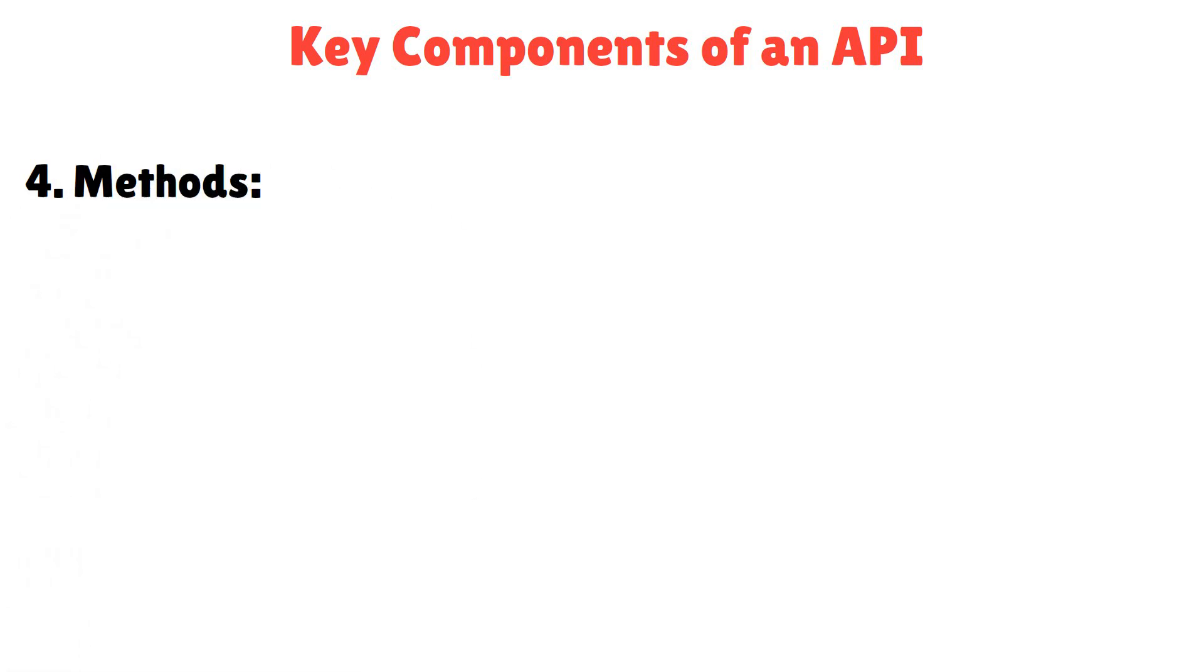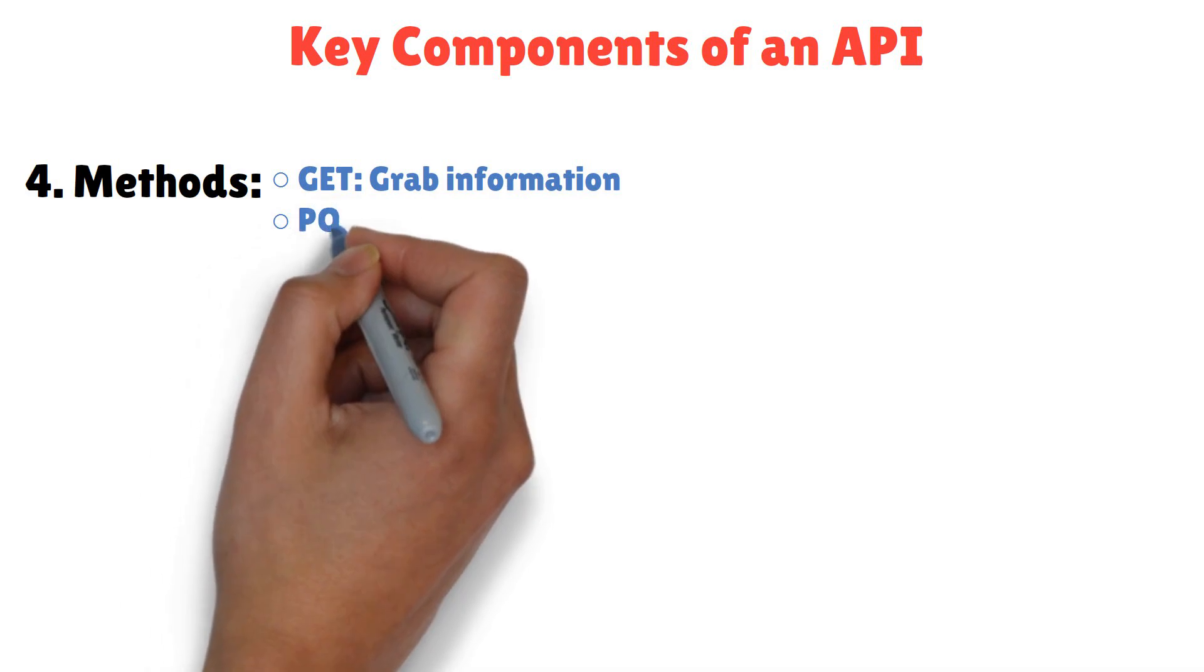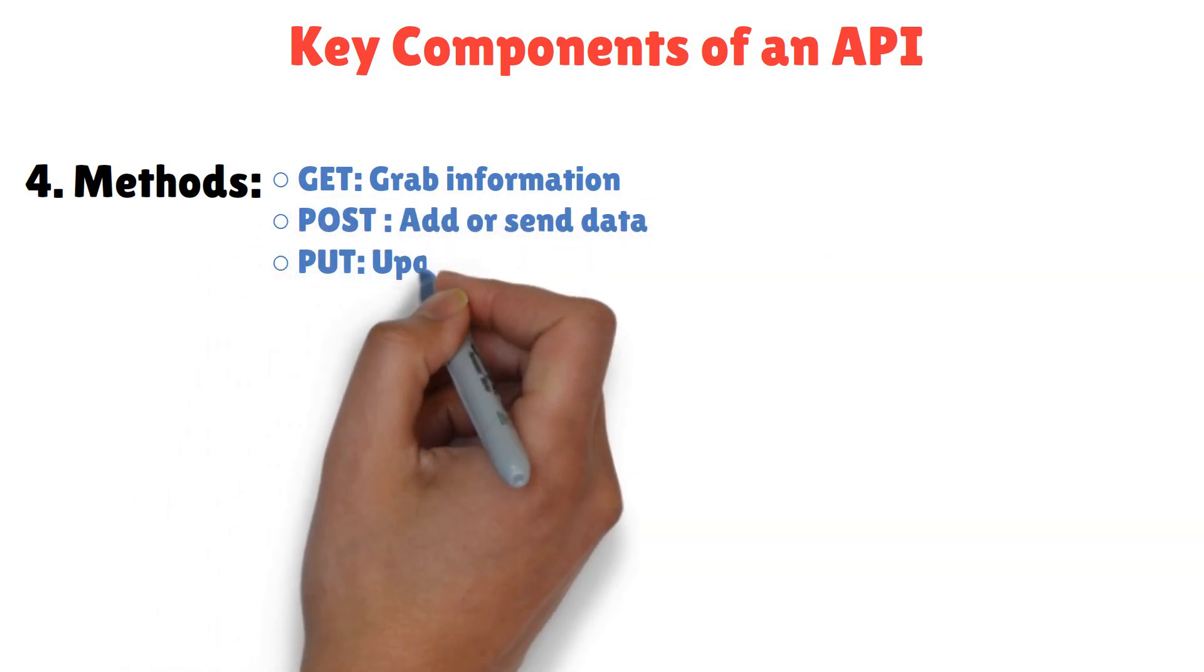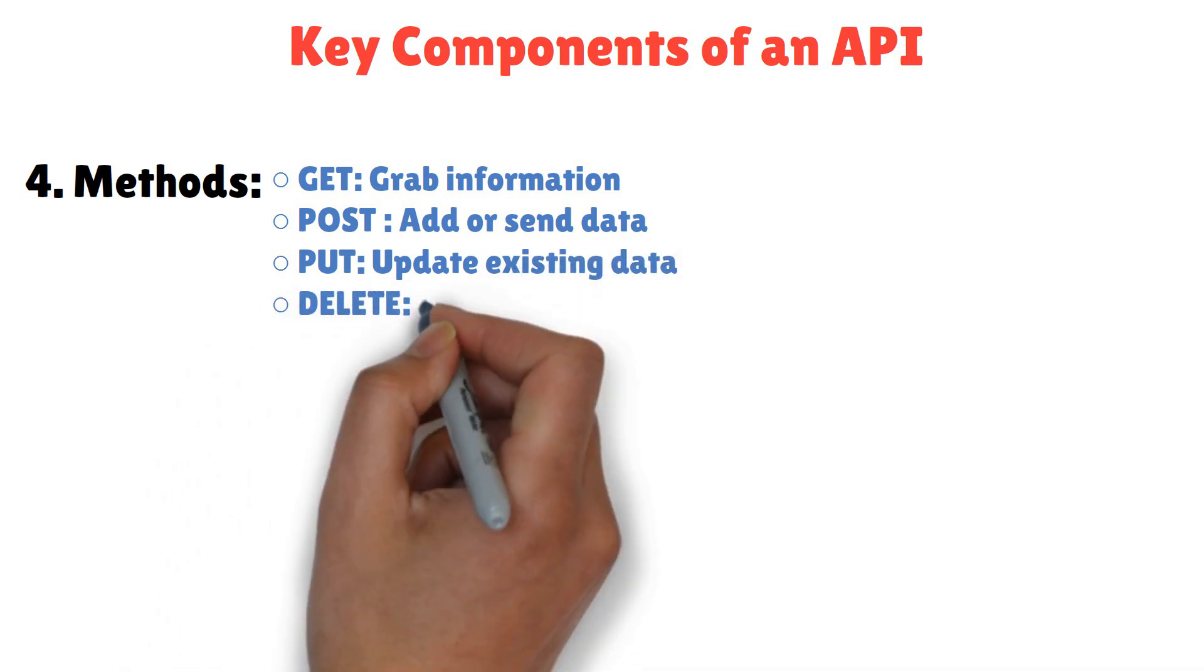Methods. The actions type. Get. Grab information. Post. Add or send data. Put. Update existing data. Delete. Remove data.